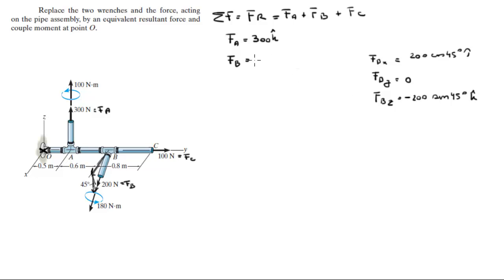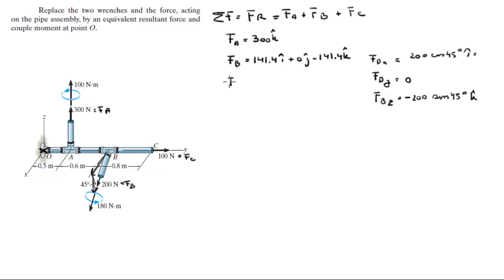Solving F_B gives 141.4 in the i, 0 in the j, and minus 141.4 in the k. Last but not least, F_C aims straight in the positive j direction with a magnitude of 100.